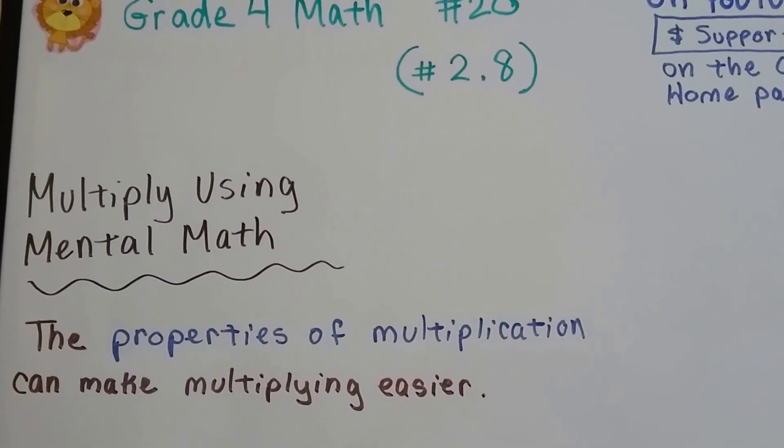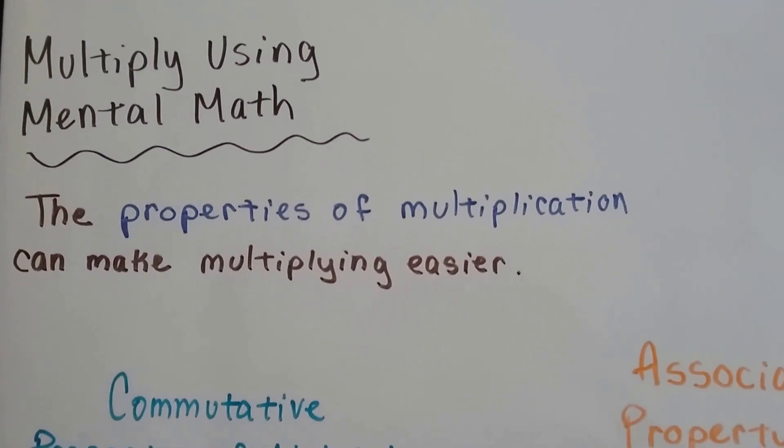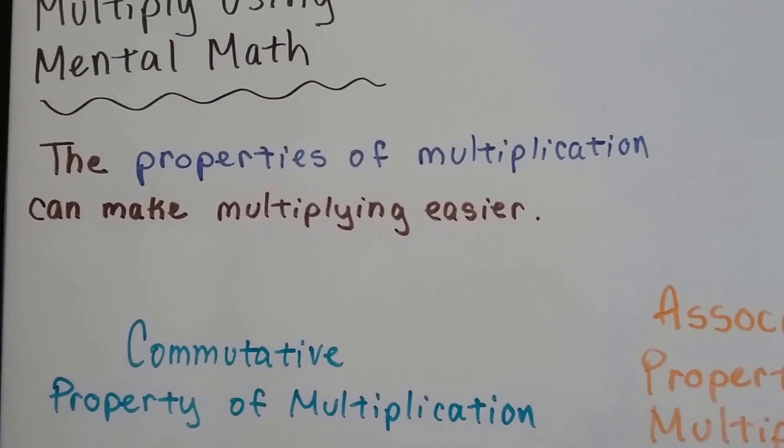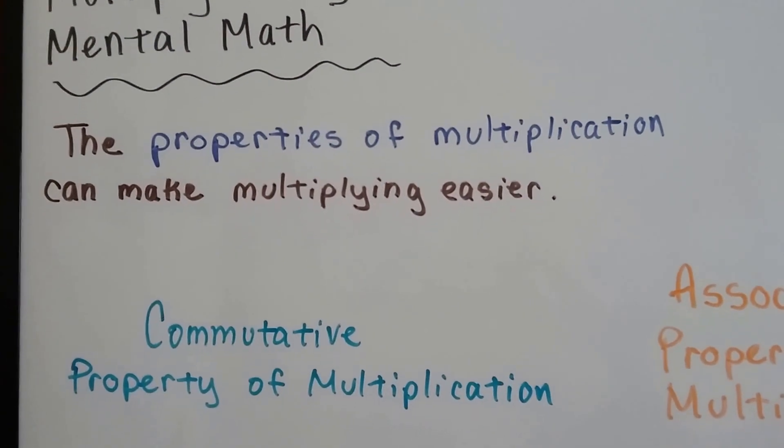So now this is a corrected video. To multiply using mental math, we can use the properties of multiplication. They can make multiplying easier.